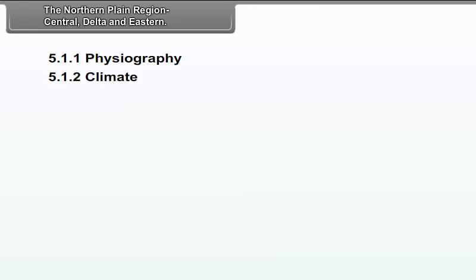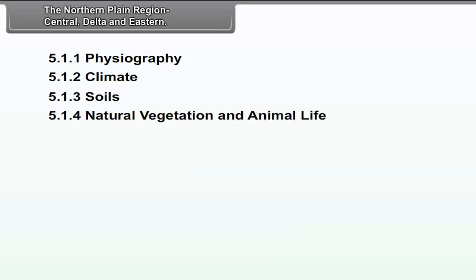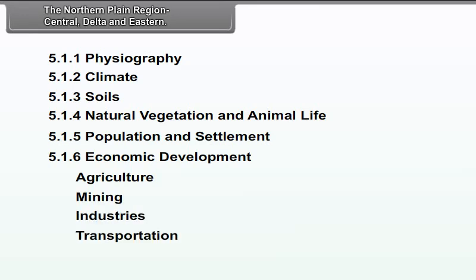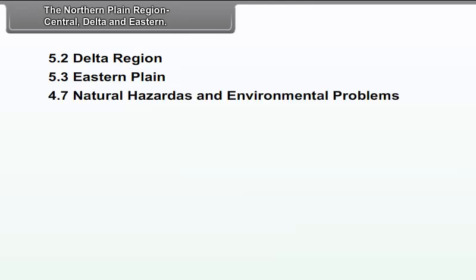Chapter 5: The Northern Plain Region — Central, Delta and Eastern. We will study the following points in this chapter: Physiography, Climate, Soils, Natural Vegetation, Population and Settlement, Economic Development (which includes Agriculture, Mining, Industries, Transportation), Delta Region, Eastern Plain, and Natural Hazards and Environmental Problems.